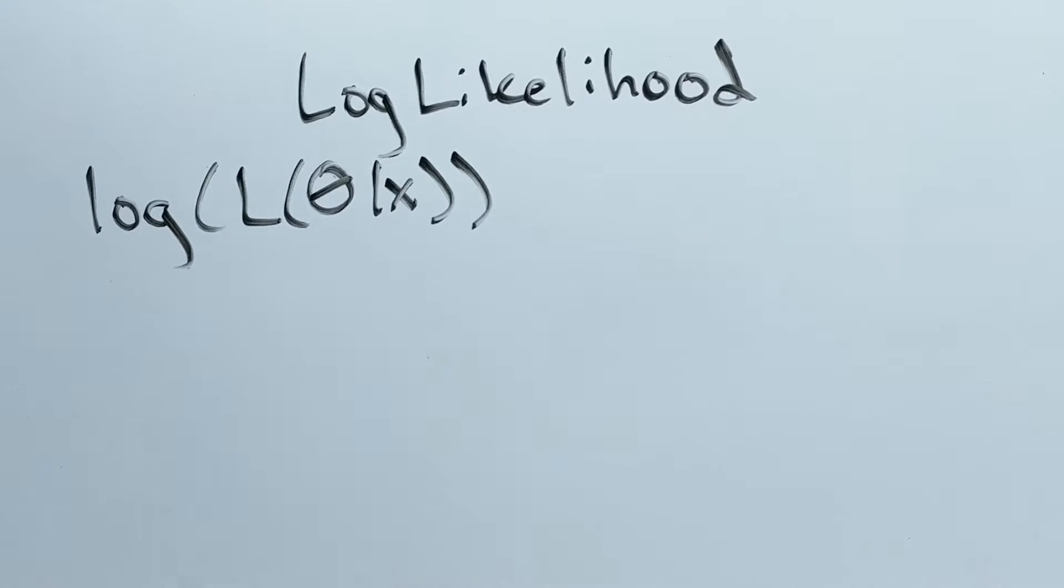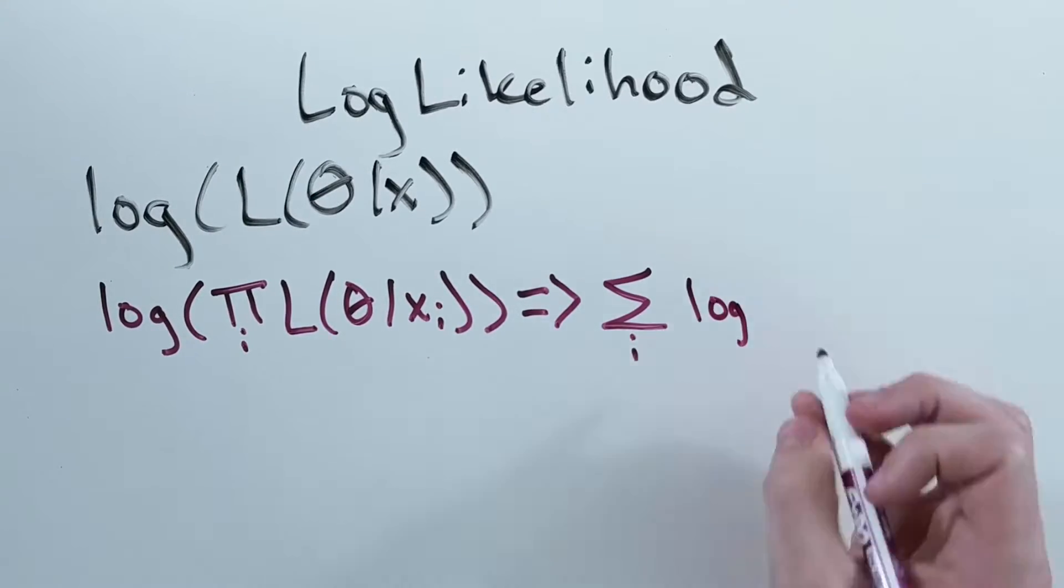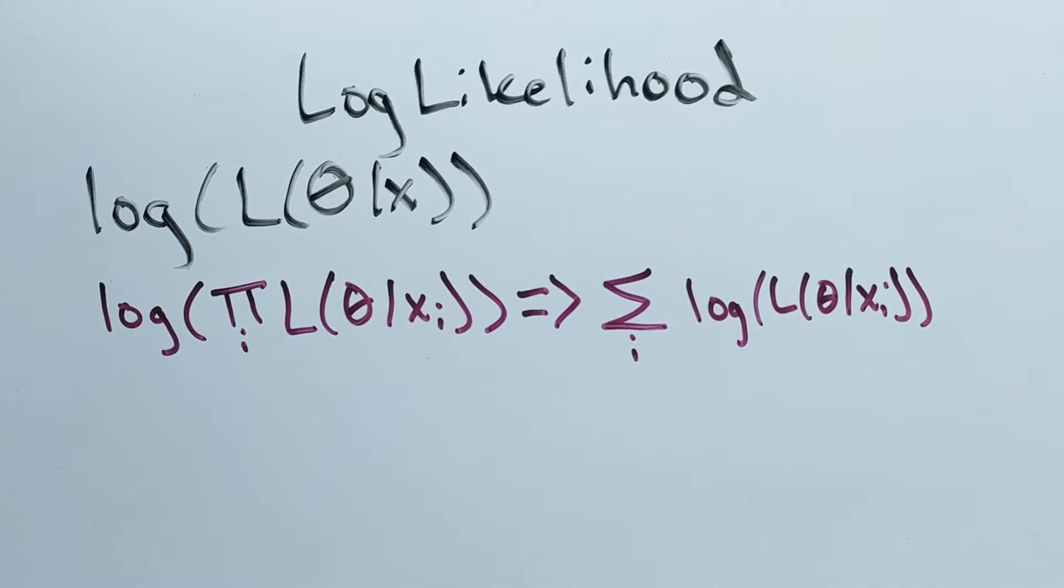So if you take the log of the likelihood of multiple data points, you will get a formula that looks like this, where we are summing over the log of the likelihood instead of multiplying the products.